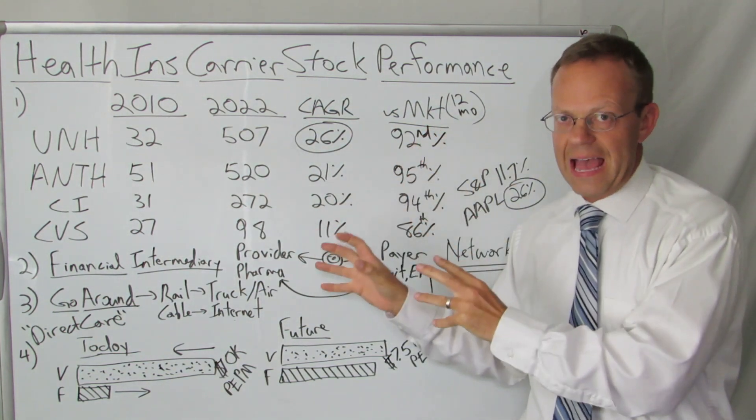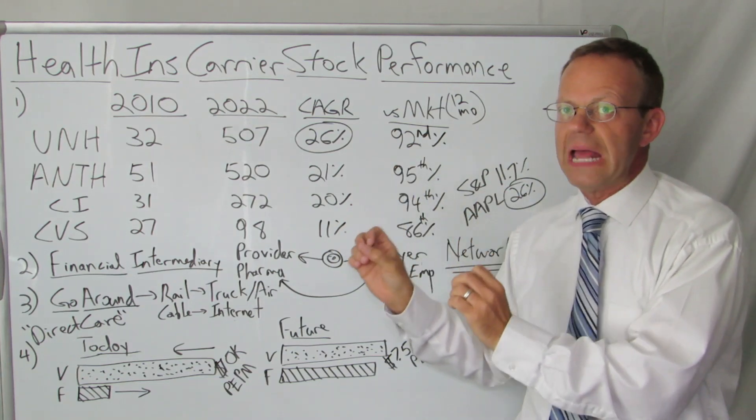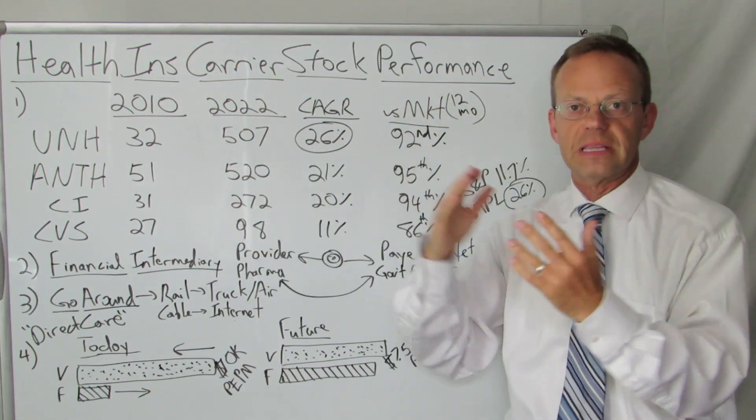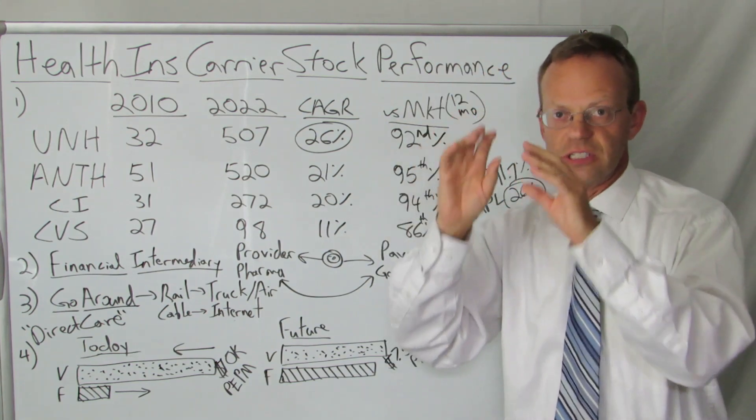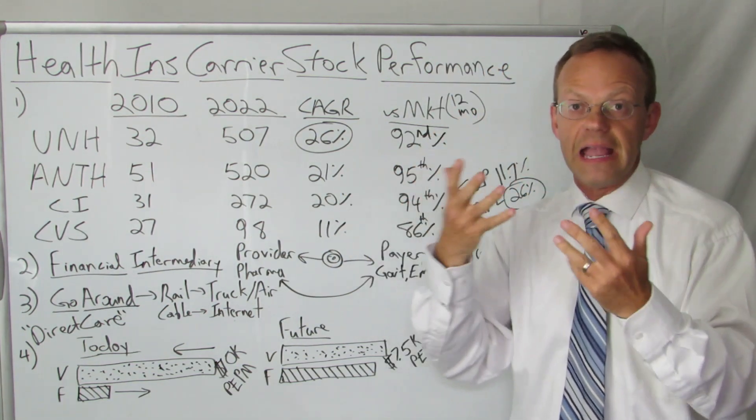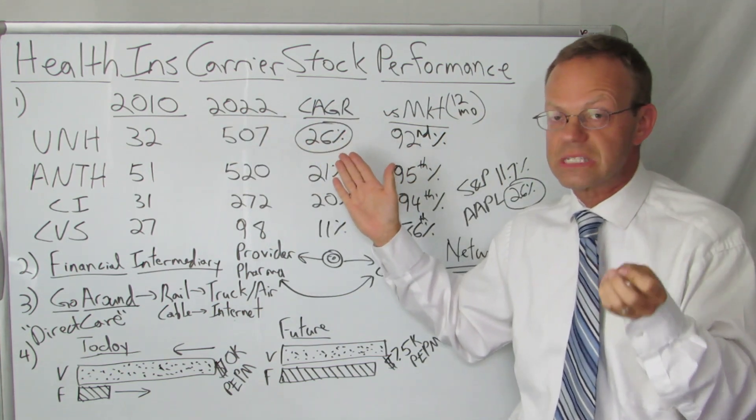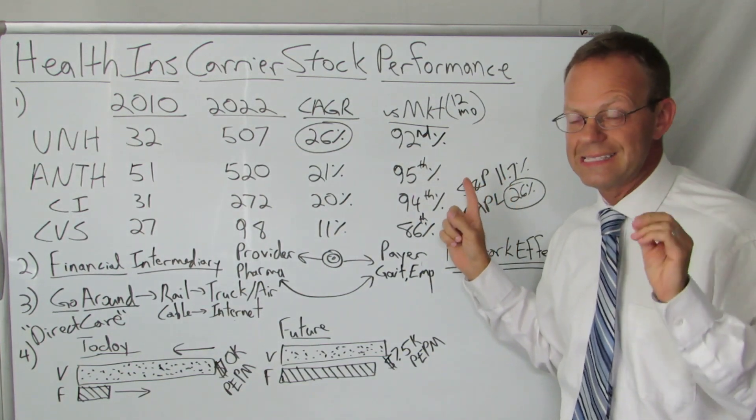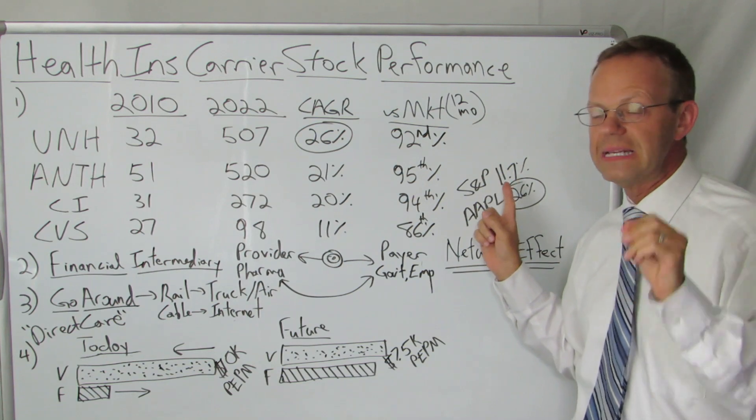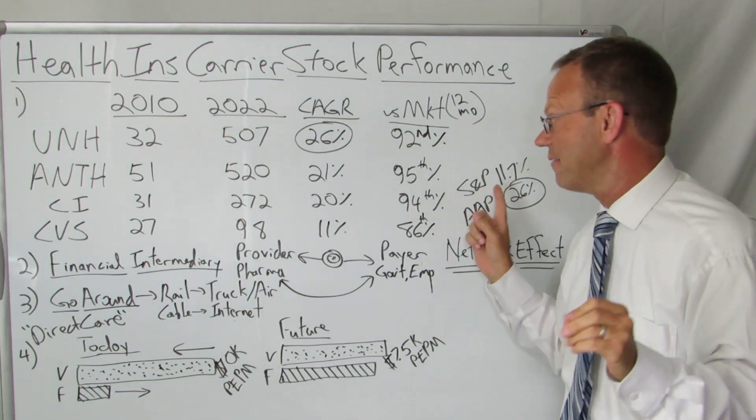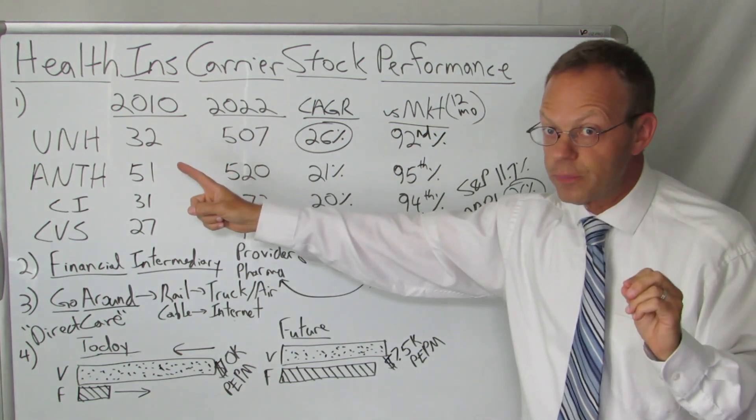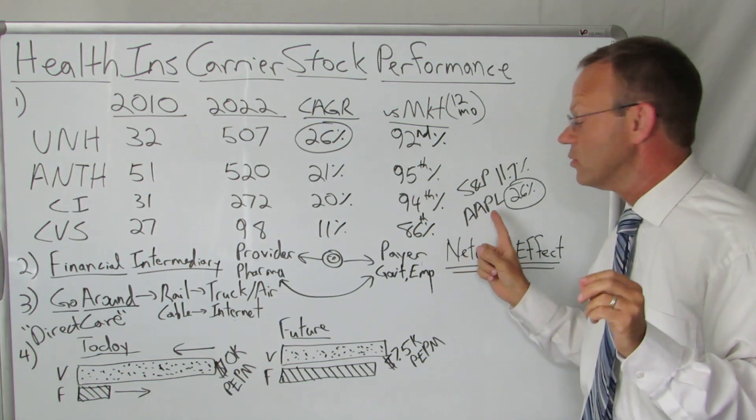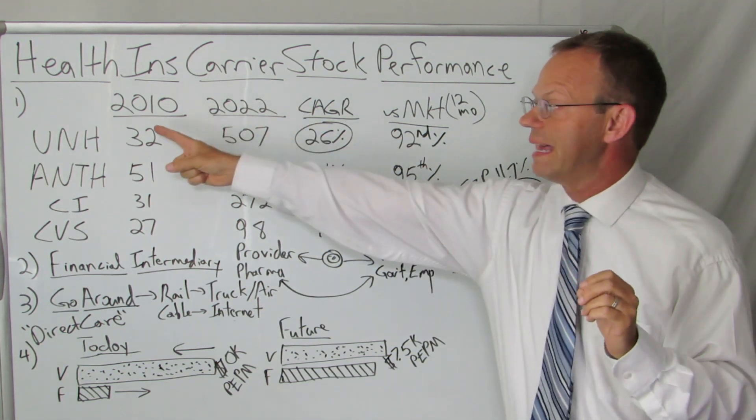The fact that these health insurance companies have not just been a little successful in their stock price, they have been hugely successful. Most industries separate themselves into 800-pound gorillas, some chimpanzees, and some monkeys. Obviously, the 800-pound gorilla is UnitedHealthcare at that 26% compound annual growth rate. To put that in context, the compound annual growth rate for the S&P 500 during the exact same time was 11.7%, less than half.